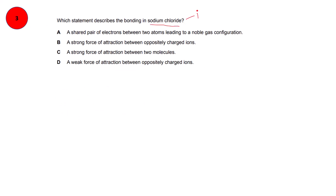Question number 3. Which statement describes the bonding in sodium chloride? Sodium chloride is an ionic compound — it has oppositely charged ions held together by a strong force of attraction. Option A describes a shared pair of electrons between two atoms, which is true for covalent bonding, so eliminate it. Option B states a strong force of attraction between oppositely charged ions — both things are correct, so option B is right. Option D mentions a weak force of attraction, but ionic compounds have strong forces, so that cannot be right.